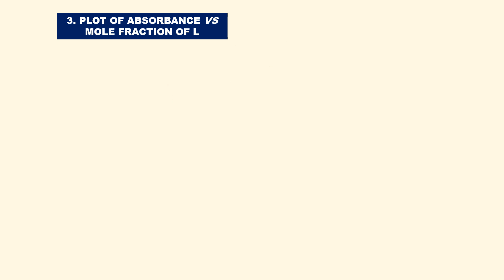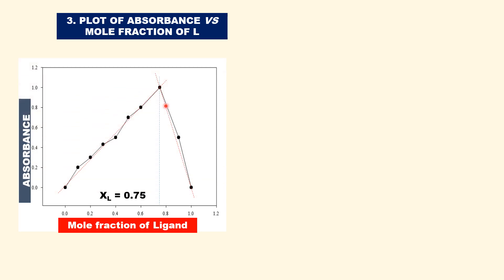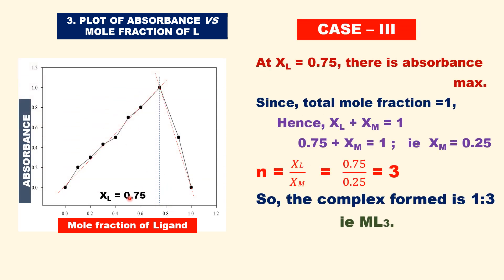In another case, the plot of absorbance versus mole fraction of ligand shows an absorption maximum at mole fraction of ligand = 0.75. Similarly, the mole fraction of metal ion equals 0.25. Therefore n equals 3, so the complex formed is 1:3 — that is ML3 is the stoichiometry of the complex.